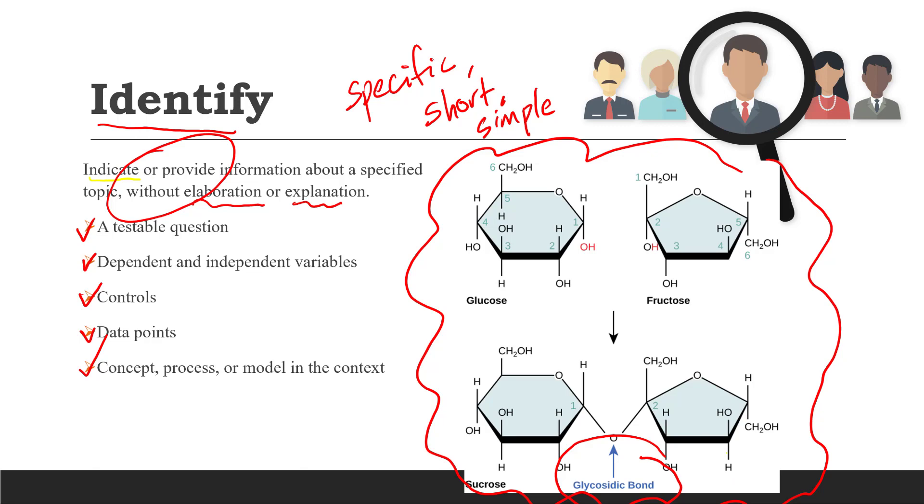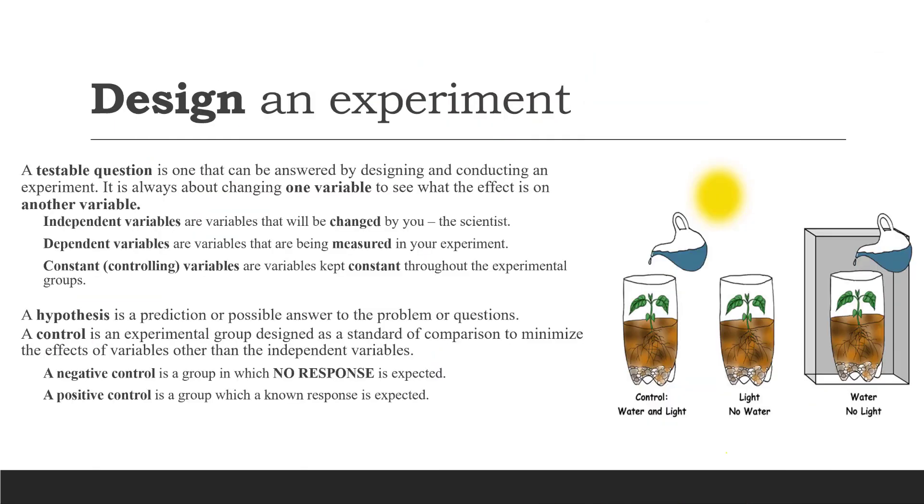Sometimes, in a situation where we need to design experiments, we will be asked to identify some of the components listed below. For instance, a testable question is a question that can be answered by designing and conducting an experiment. Notice that this is not just some random question. It has to be a question in which you change one variable to see what the impact is on another variable.